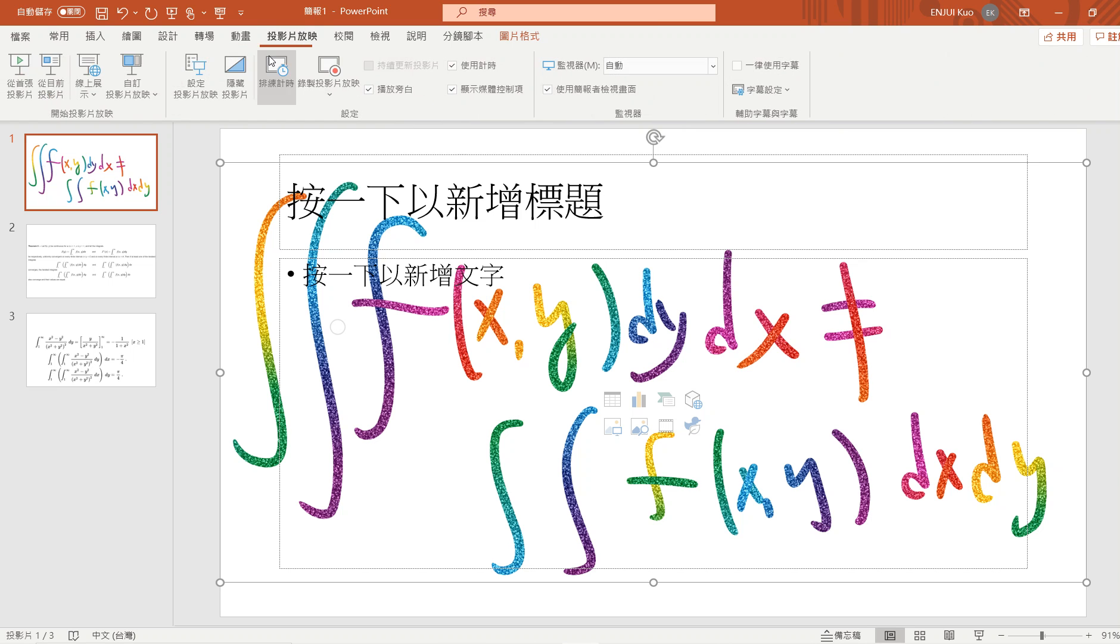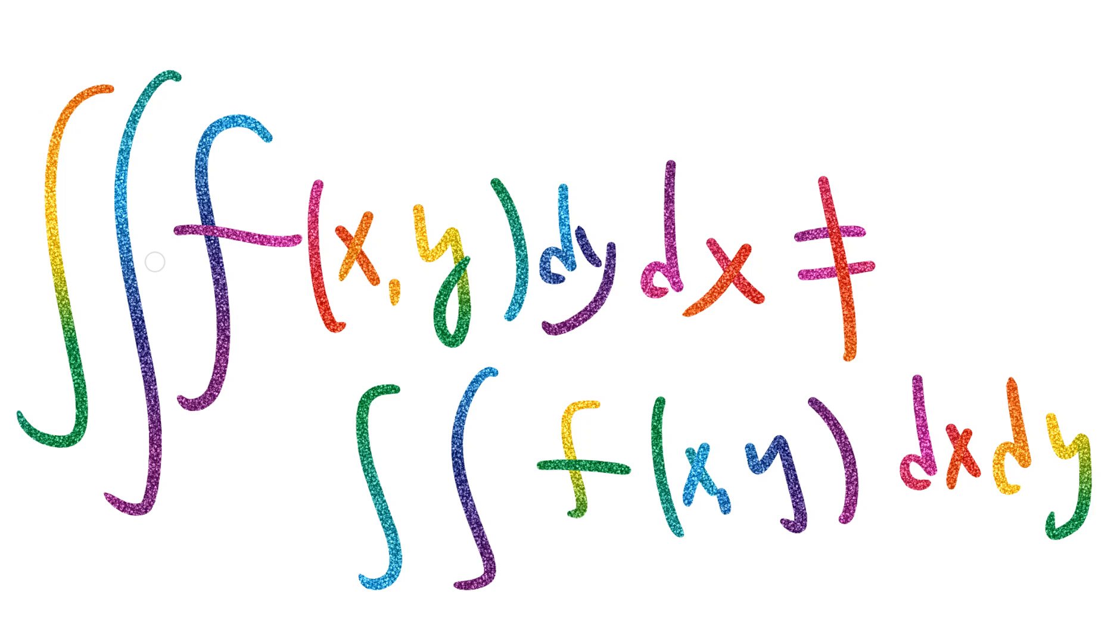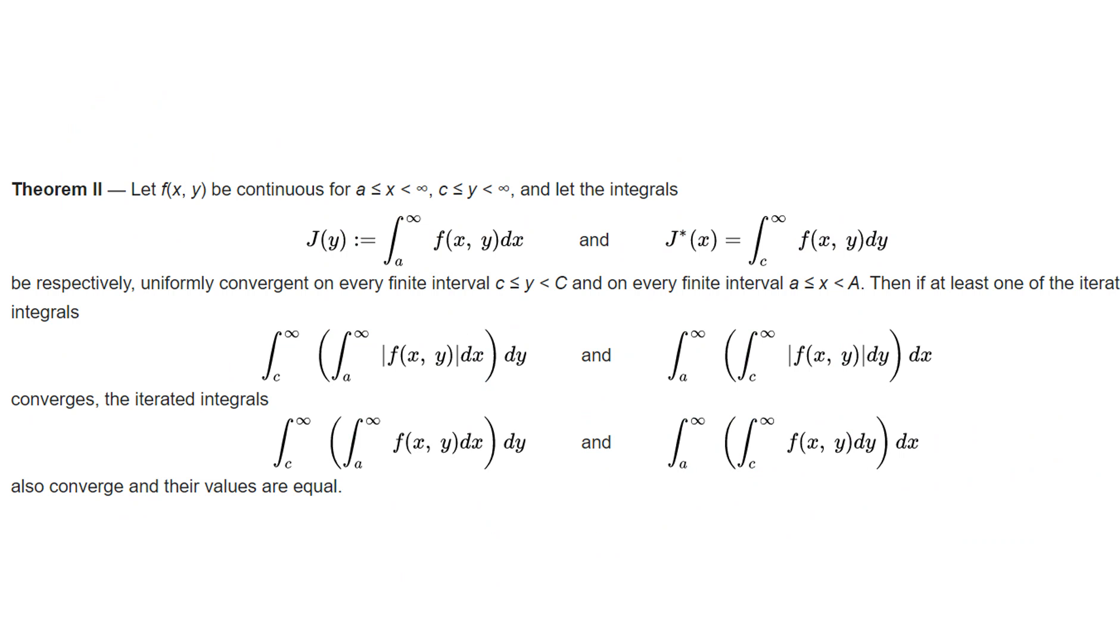Welcome guys, so this video we are providing a simple example in real analysis where if you change the variable, the integration results will not be the same. Let me just recall the theorem, so basically it's the Fubini theorem or Tonelli theorem.